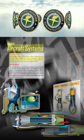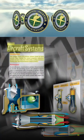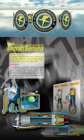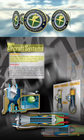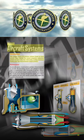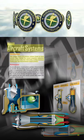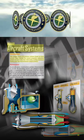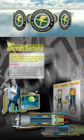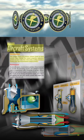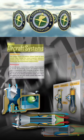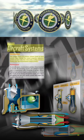Chapter 7 introduces the primary systems found on most aircraft. These include the engine, propeller, induction, and ignition, as well as the fuel, lubrication, cooling, electrical, landing gear, and environmental control systems.